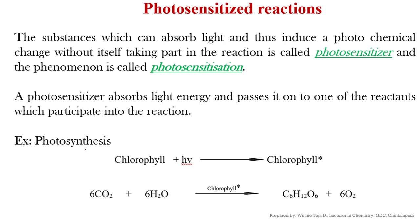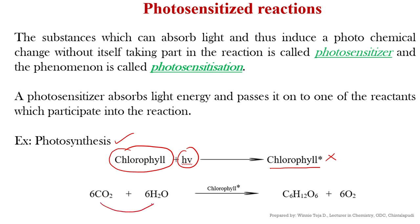Let me explain with the example of photosynthesis. In photosynthesis, chlorophyll absorbs light radiation and gets excited as chlorophyll*. Chlorophyll never participates in photosynthesis itself, but it acts as a photosensitizer — this activated chlorophyll transfers its light energy to carbon dioxide and water, so that these two molecules participate in a photochemical reaction. That is the meaning of photosensitization.